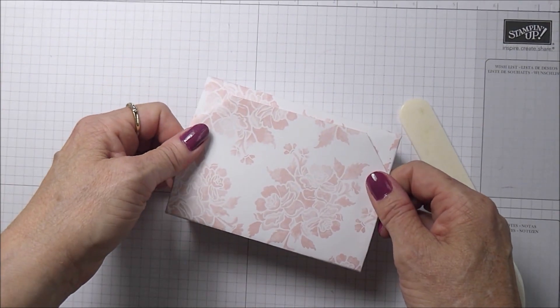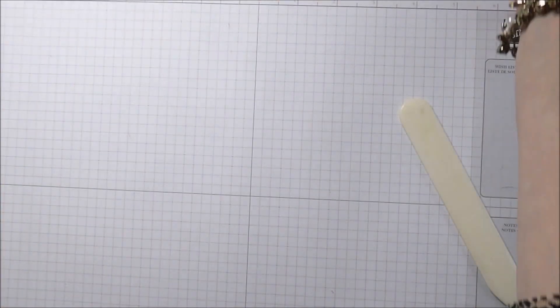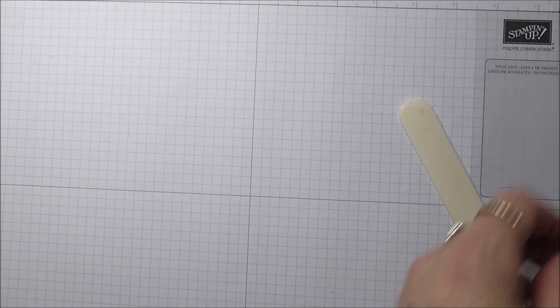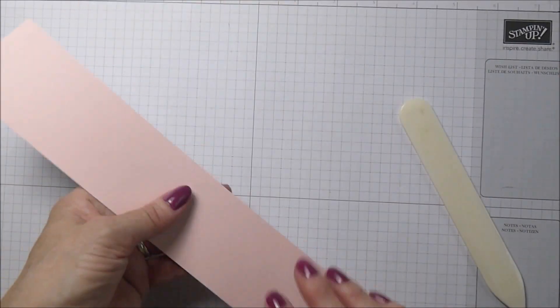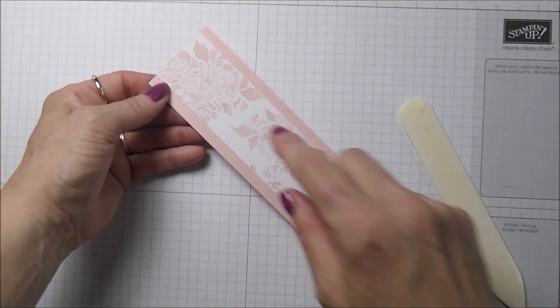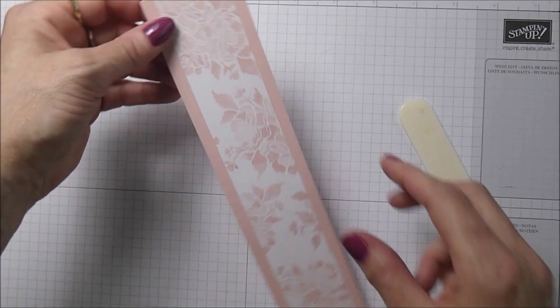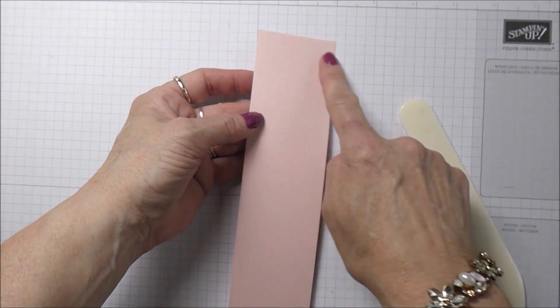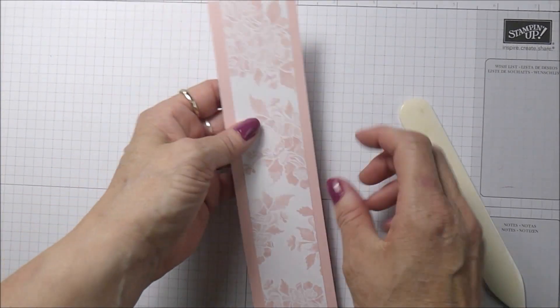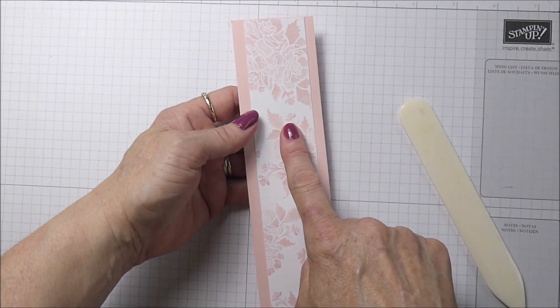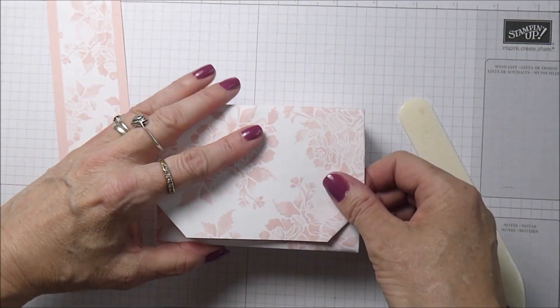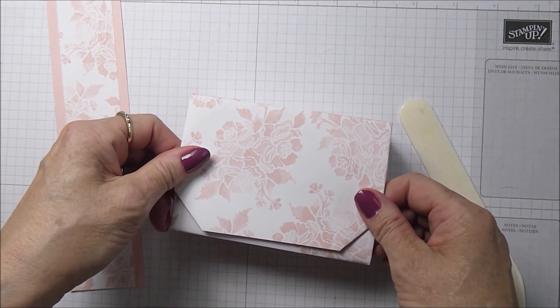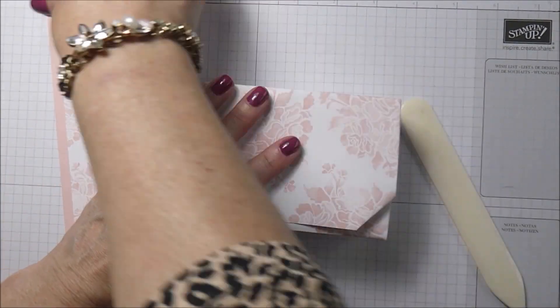We're going to make a nice little belly band that will hold this together. For the belly band, I've got two pieces of card here. This is powder pink and this is a piece of the DSP. This piece of card is two inches by 10 and this DSP strip is one and a half inches by 10. It's just a question of wrapping it around the box.